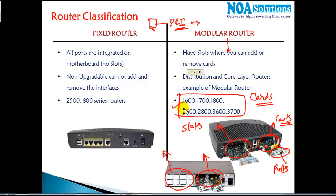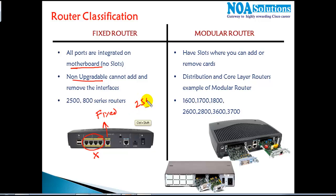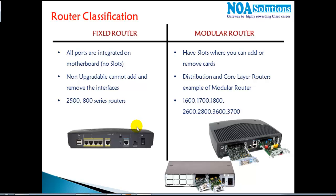Most of the router series you see in today's production networks are modular routers. In the case of a fixed router, all the ports are fixed on the motherboard — they are integrated and non-upgradable; you cannot remove or add ports. Examples include the 2500 series and some 800 series routers, which fall under the fixed router category.